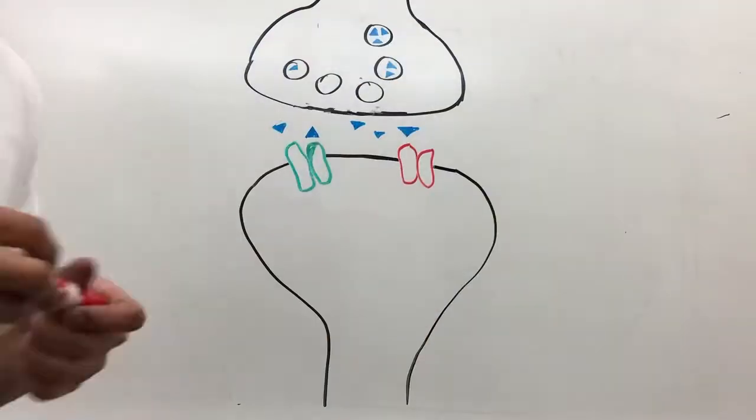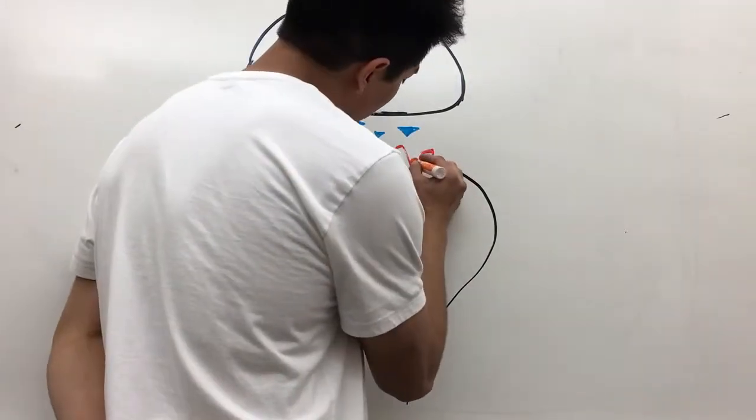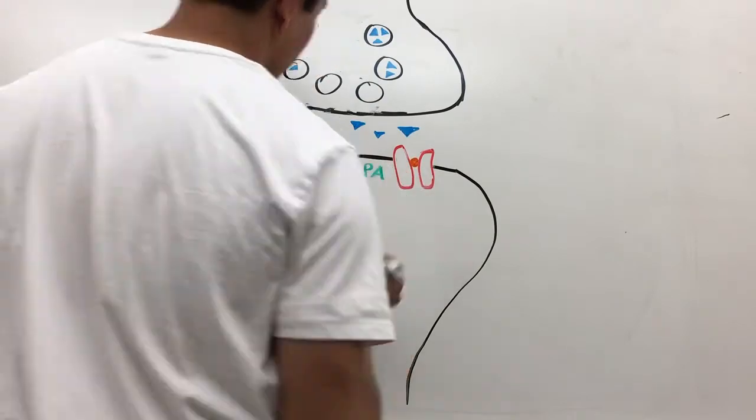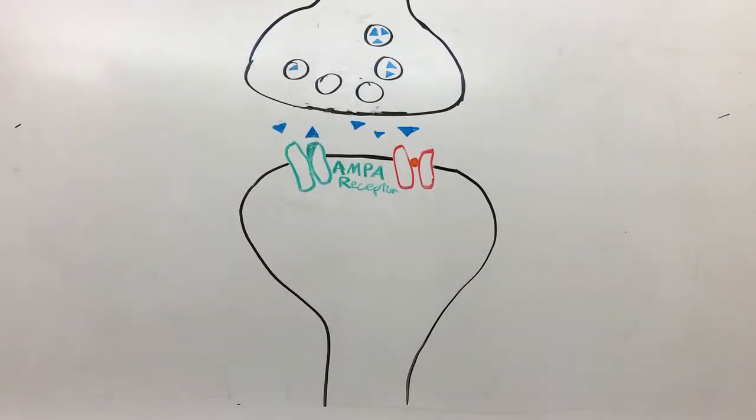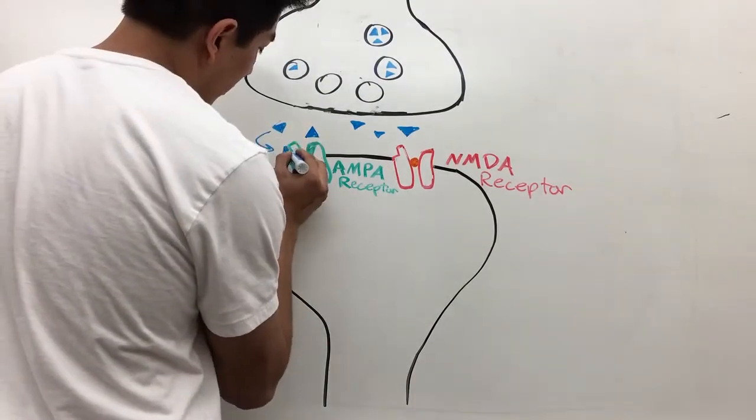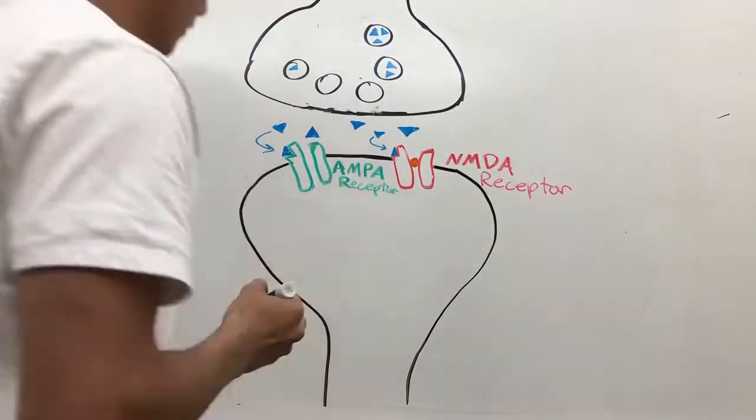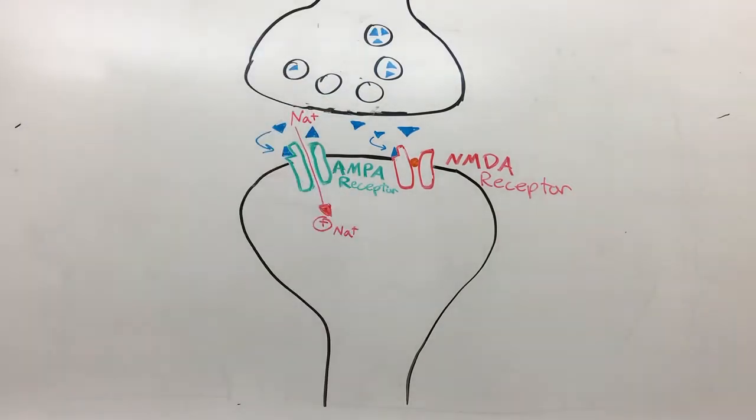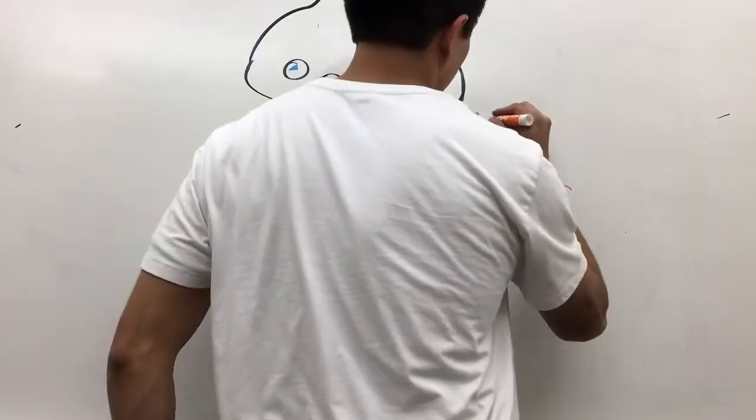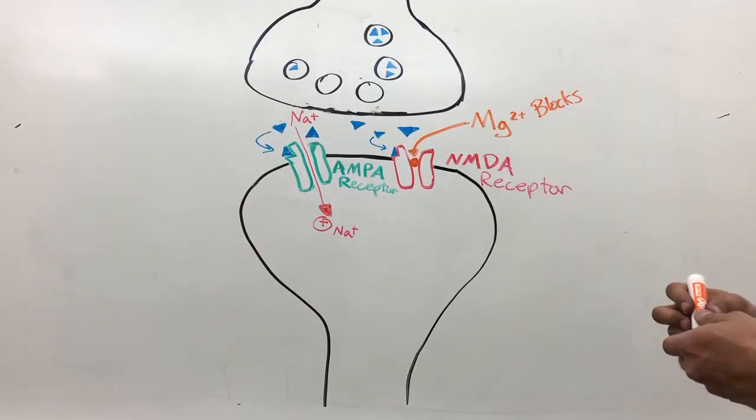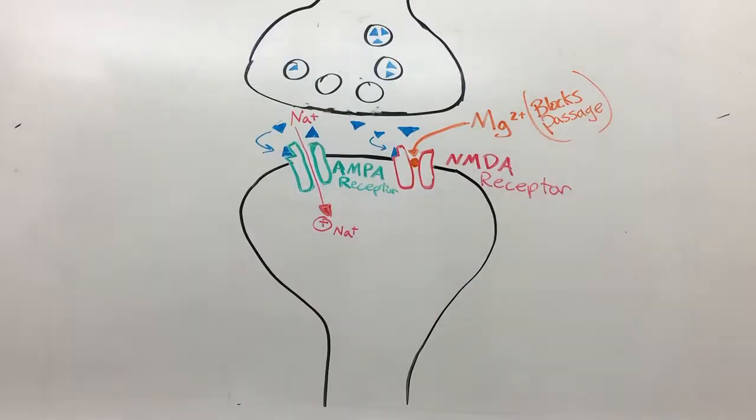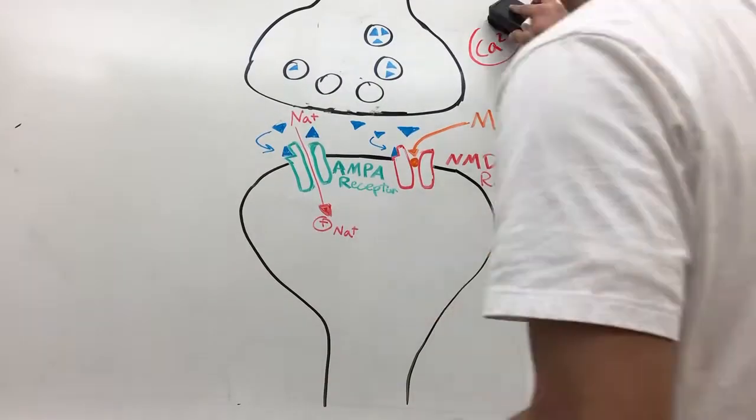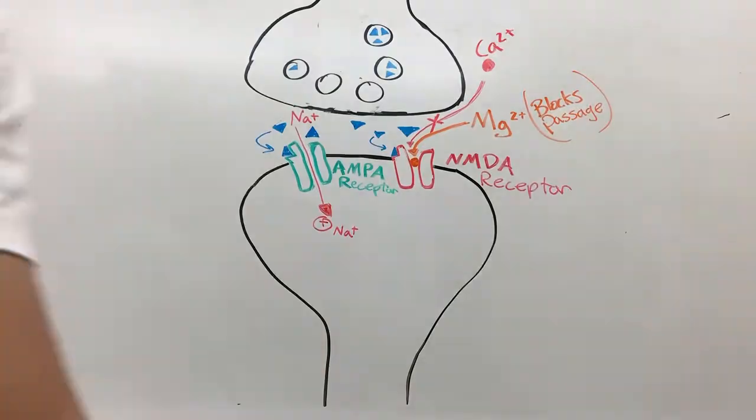Here in the postsynaptic neuron, the CA1 neuron, we have two types of receptors: the AMPA receptor and the NMDA receptor. The AMPA receptor will let in sodium to allow for postsynaptic depolarization. The NMDA receptor is permeable to calcium. Now we have glutamate that attaches to these receptors and allows them to open up.